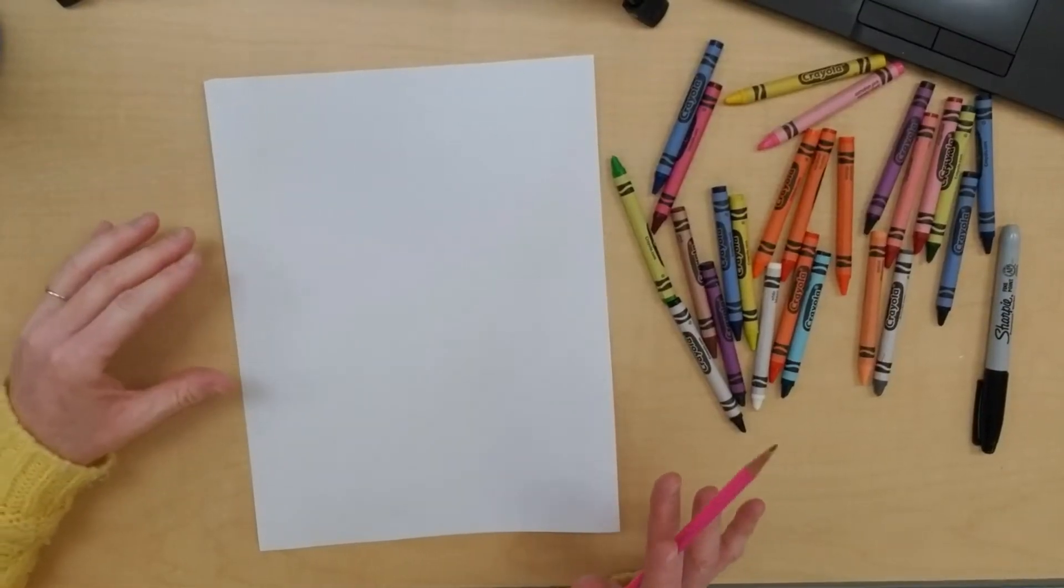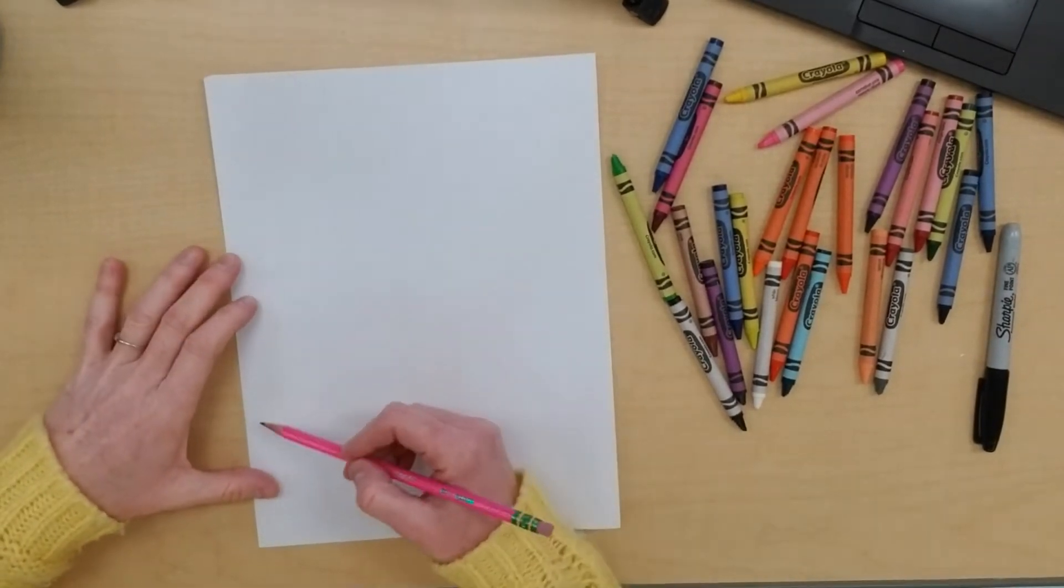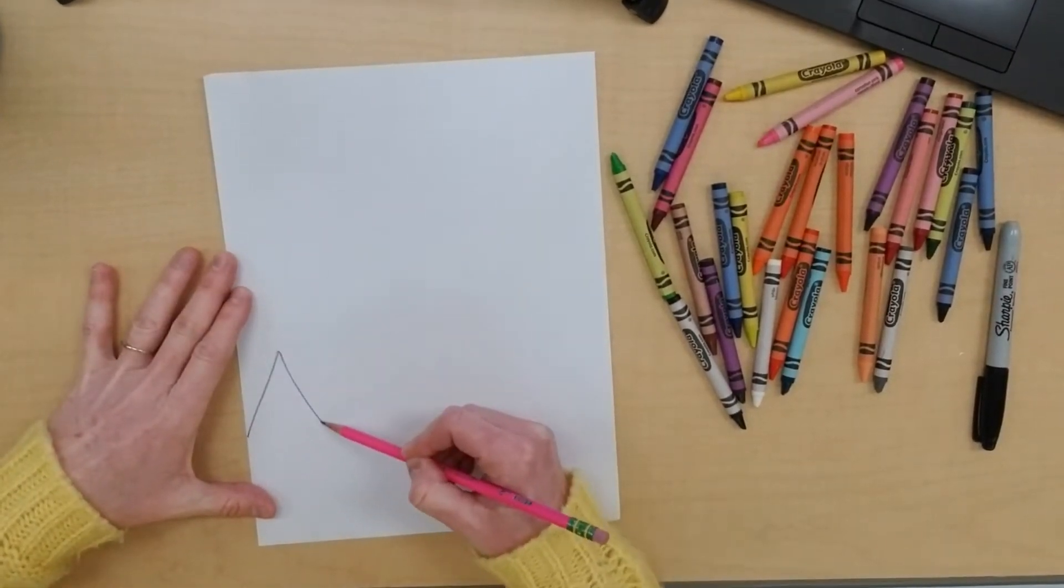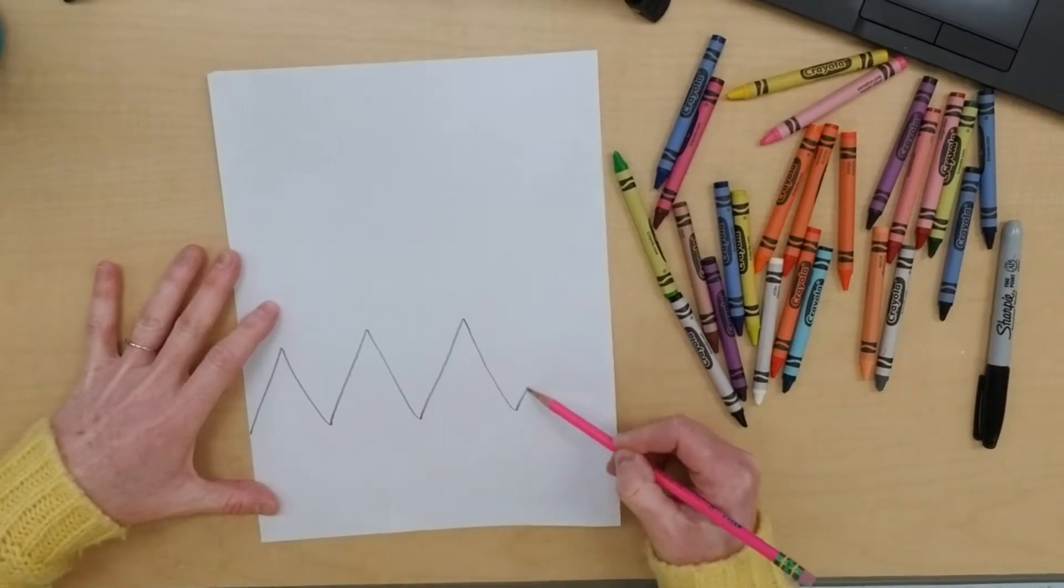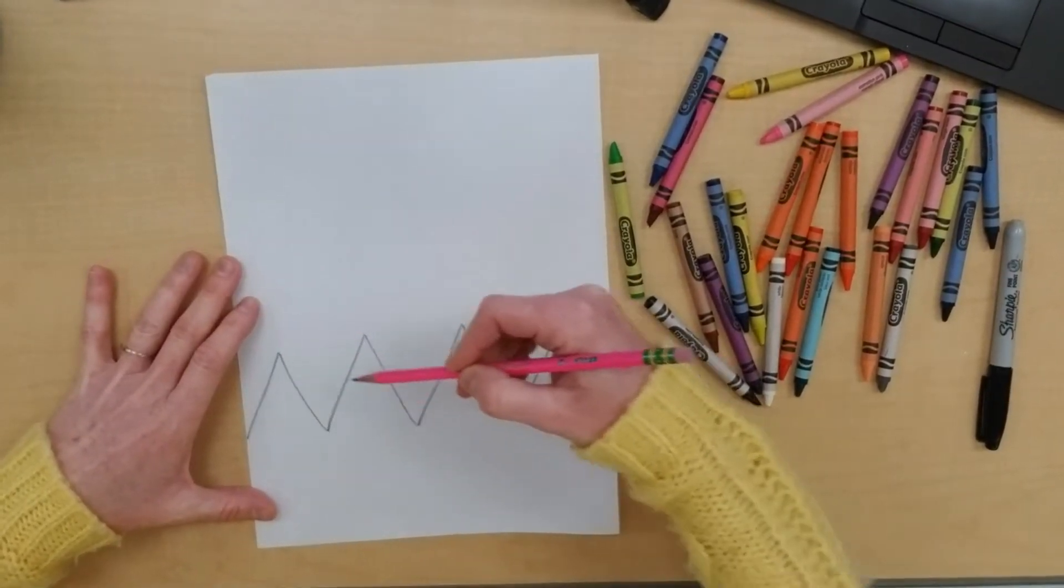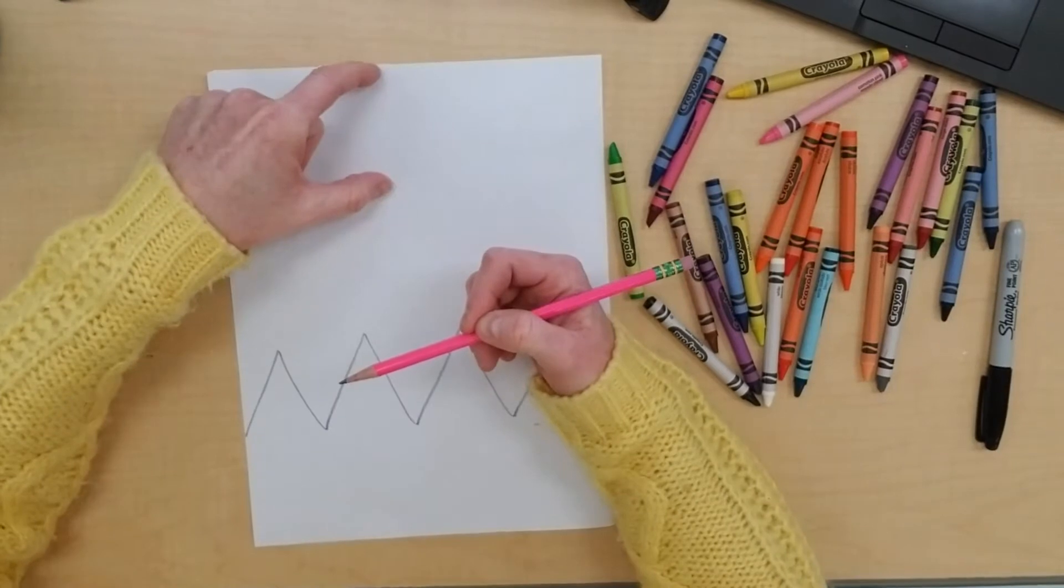For the bunny, we're going to start with a zigzag line across the bottom of our paper. Here we go, zigzag, zigzag, zigzag. And then draw a big rainbow line, but leave enough space up at the top so we can